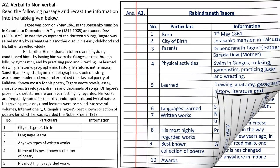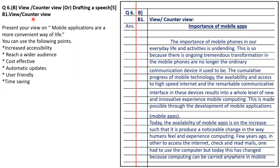Question 6B is view/counter-view or drafting a speech. First, B1 is view/counter-view. The question is: present your views on mobile applications are a more convenient way of life. You can use the following points: increased accessibility, reach a wider audience, cost effective, automatic updates, user friendly and time saving. When views are written, whatever points are given, you are in favour of that topic. If counter view is asked, it is exactly the opposite. Here views are asked, so you are in favour, meaning you support mobile apps. Give the title Importance of Mobile Apps.